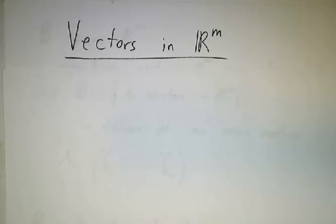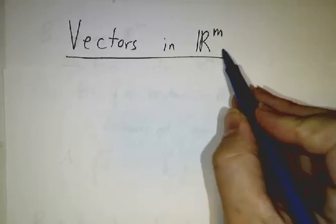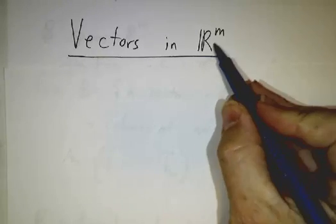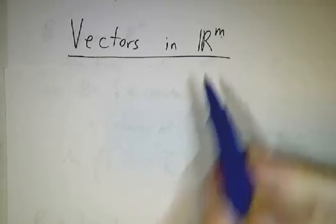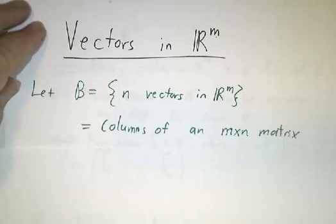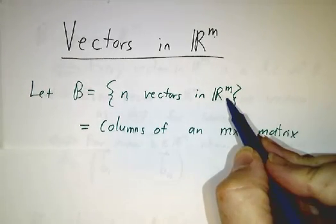Now let's talk about what that means for vectors in Euclidean space, in R^m. And I'm going to call it R^m rather than R^n because we're going to take a collection of n vectors in R^m.